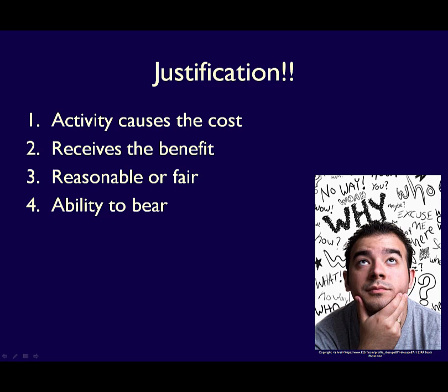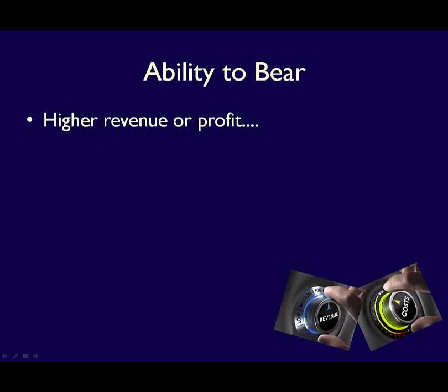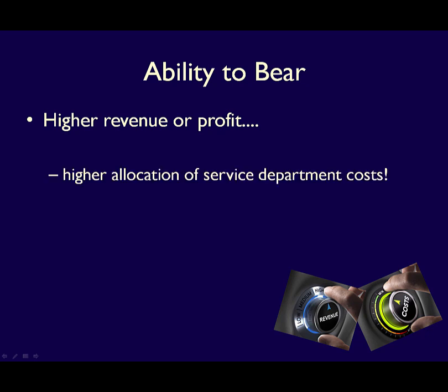Looking at the criteria that will help us justify our cost allocation decisions and choose a method, we're going to start with the operating department being able to bear the cost. Here, the focus is on charging operating departments that generate the most revenue, because those departments can bear the most costs — they have the revenues to cover them. The basis for the allocation could be something like revenue or profit.